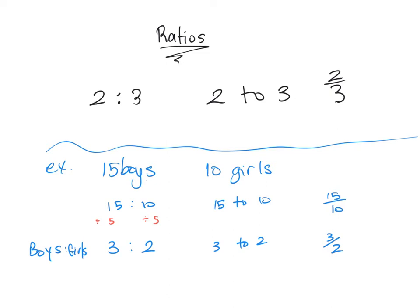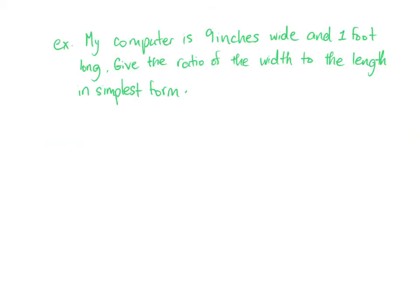All right. So we're going to look at one more example. And in my last example, we're going to have units, different units, and we're going to talk about how to tackle it when you see a ratio, when you see different units. Okay. So in this example, I have a computer. My computer is 9 inches wide and 1 foot long. So notice we have inches and we have feet, which are two separate units.